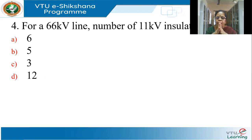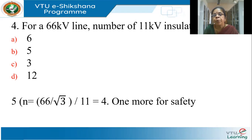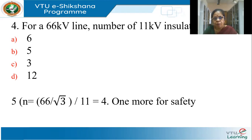For a 66 KV line, how many 11 KV insulators do you use? You might be tempted to write 6 — don't. The answer is 5. For a 66 KV line, 66 KV is the line-to-line voltage. In a three-phase system, the voltage across an insulator is the line-to-neutral voltage. So convert: 66 divided by root 3, then divide by 11, which is approximately 4. So 4 discs are enough, plus one extra for safety — giving 5.